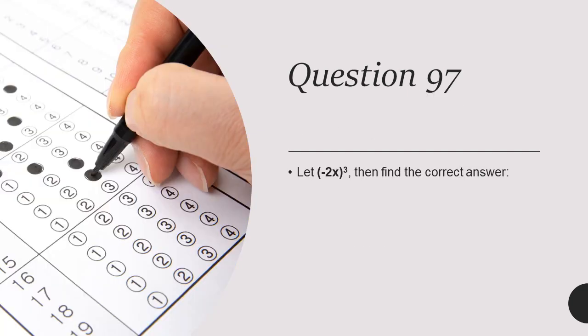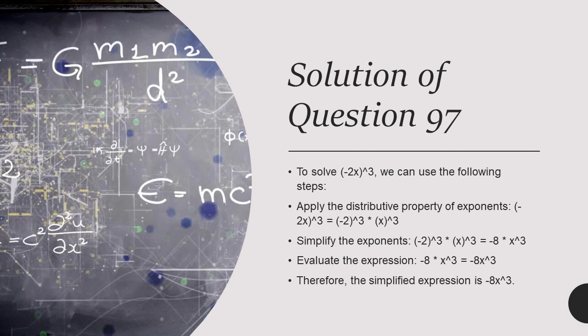Question 97: Let minus 2x whole cube. Then find the correct answer, which is minus 8x cube. Pause the video to see that when this is solved, the answer comes out as minus 8x cube, or you can also write it as minus 8x power 3.